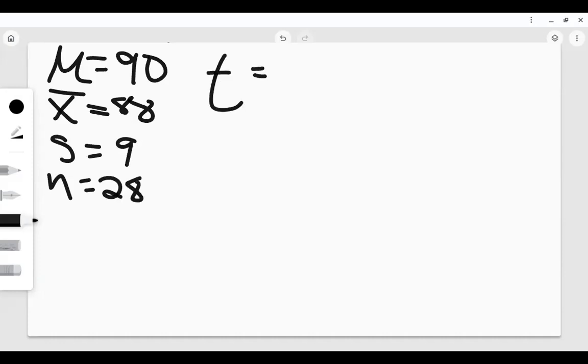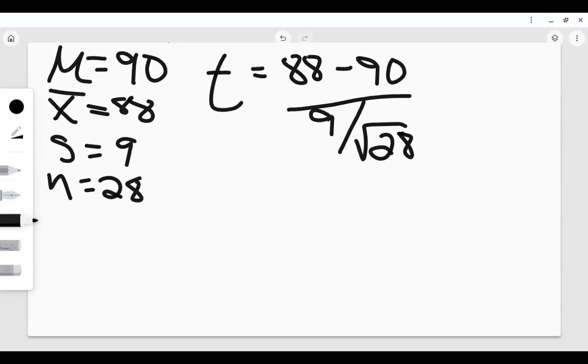Remember, it's your score minus the mean. In this case, our score is 88 minus 90 divided by the standard deviation, which is 9 divided by the square root of 28. So remember, I always tell people to solve from the bottom up. So the first thing we want to do is solve for the square root of 28.